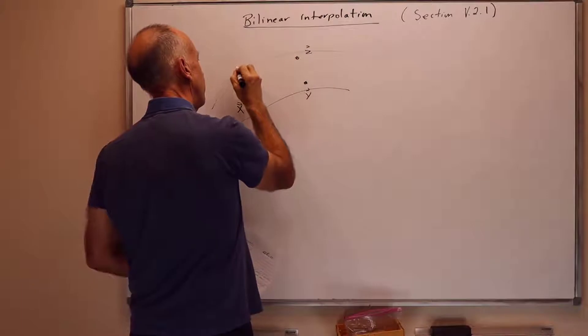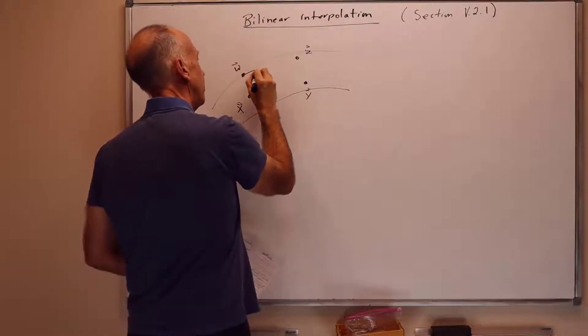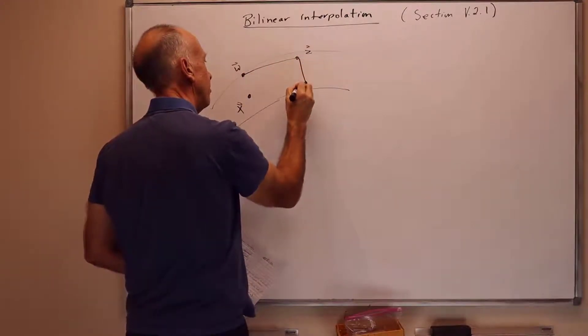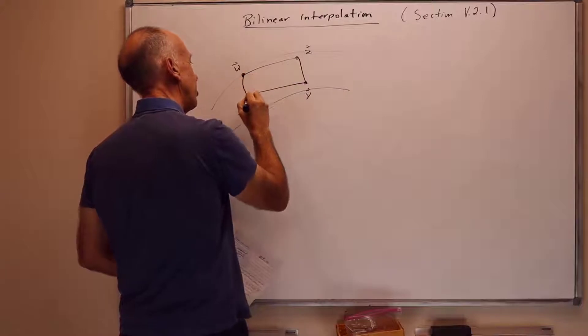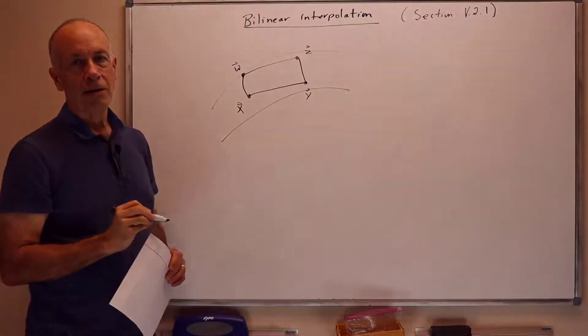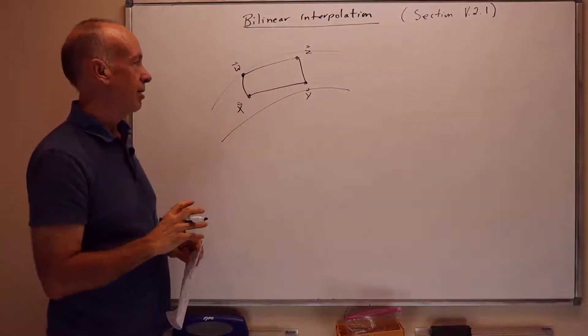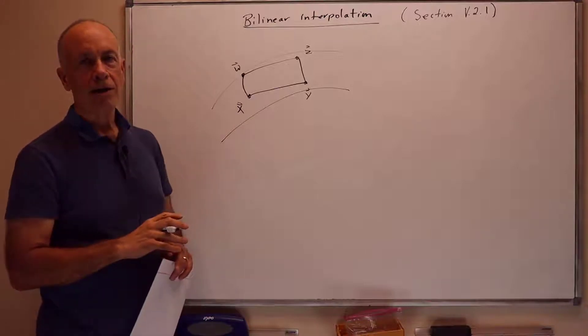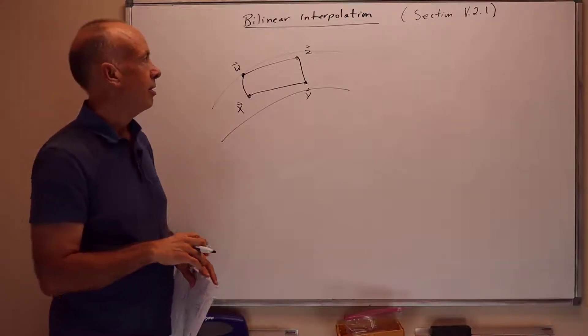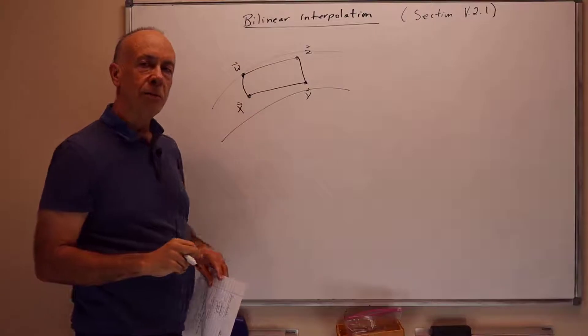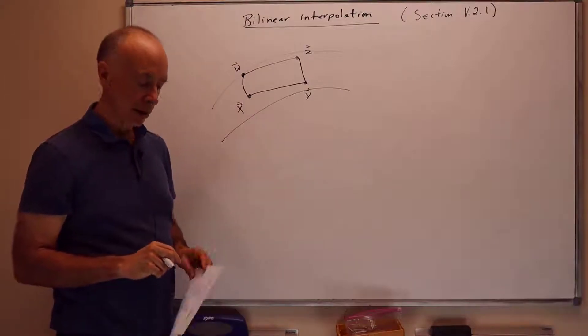And sitting on this curved surface are four points x, y, z, and w. And they make some rectangular patch which may not be, if it's actually on the surface it won't be a perfect rectangle. It will be some curved object sitting there. But we'd like to approximate the surface by using what's known as bilinear interpolation, which means we'll be using linear interpolation twice.